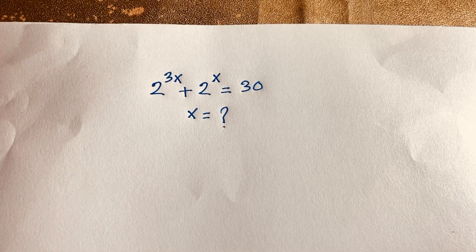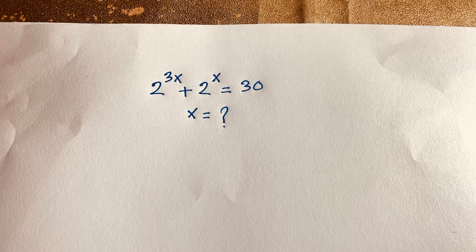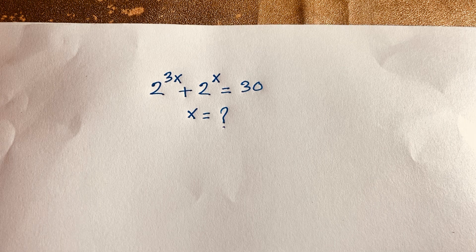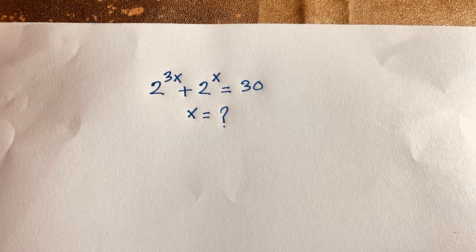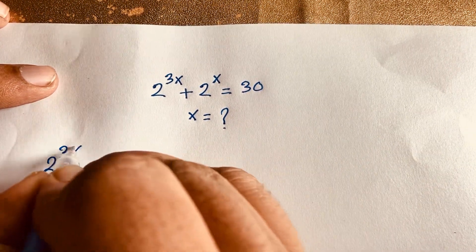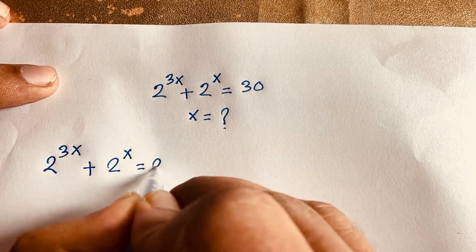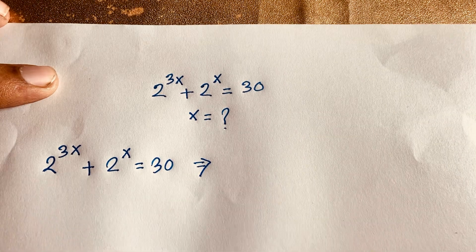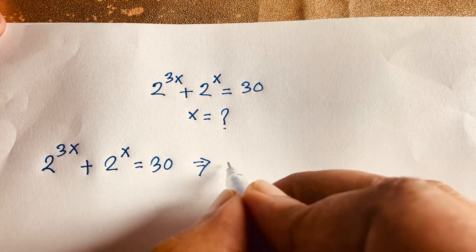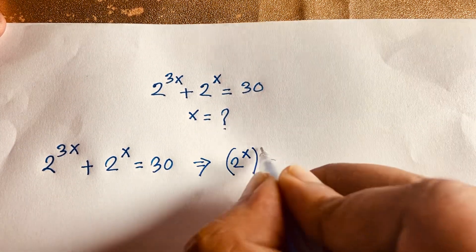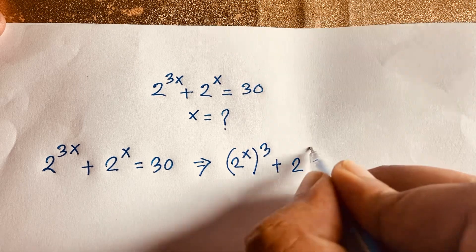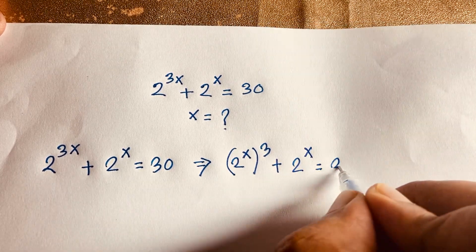Hello everyone. In this video we have solved this interesting exponential equation — it is a Maths Olympiad question. The equation is 2 to the power 3x plus 2 to the power x is equal to 30. What is x? Let's start.